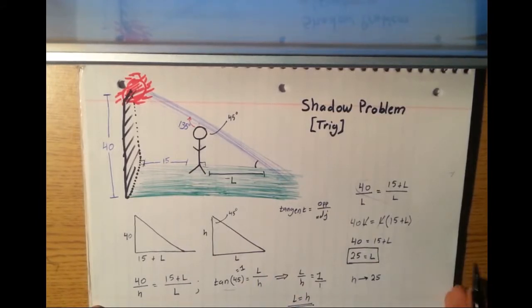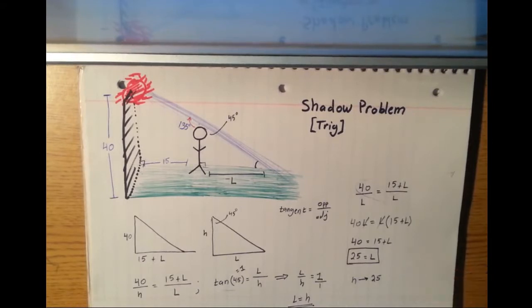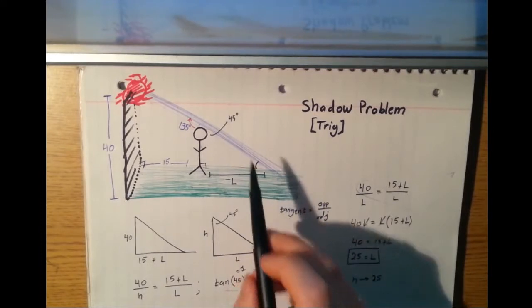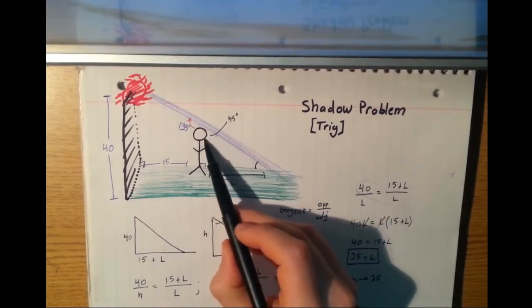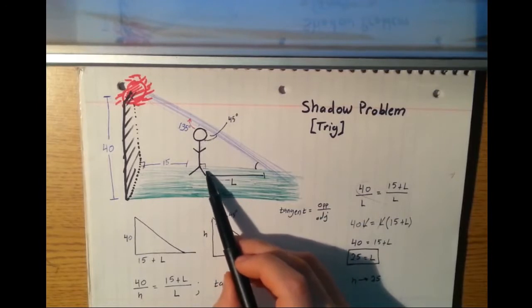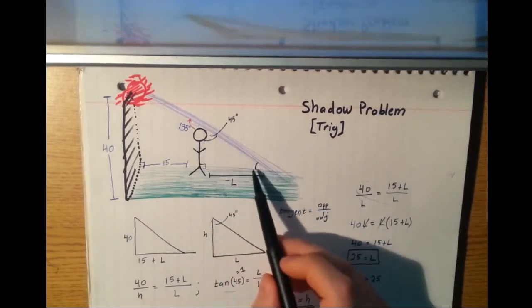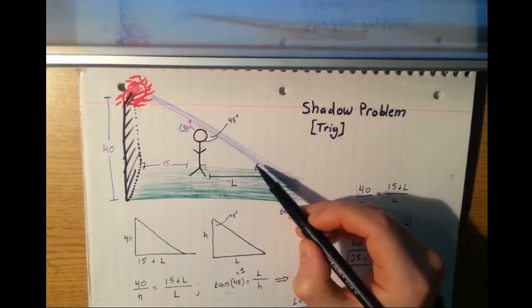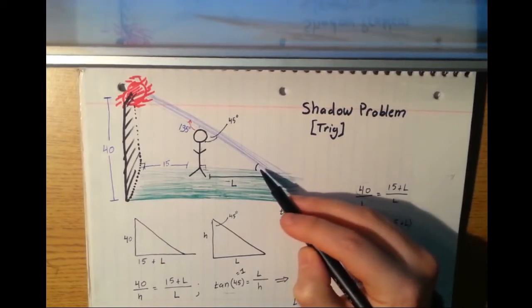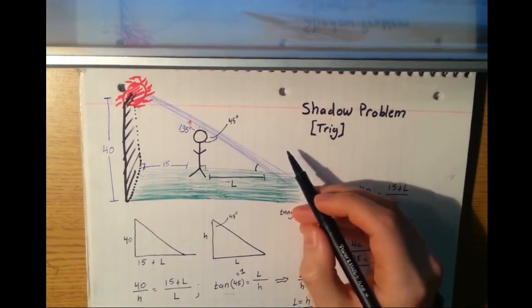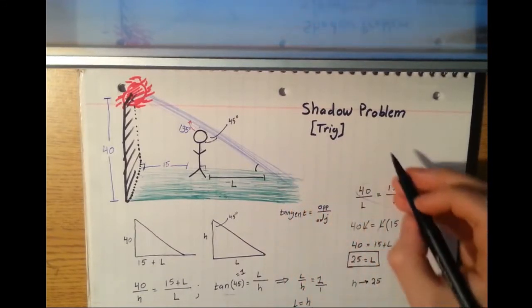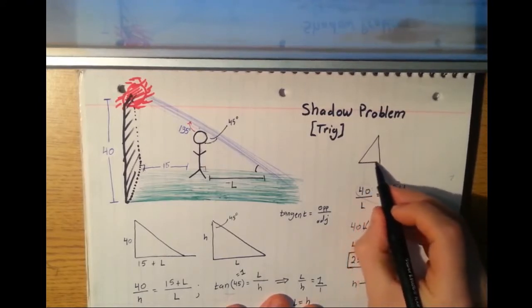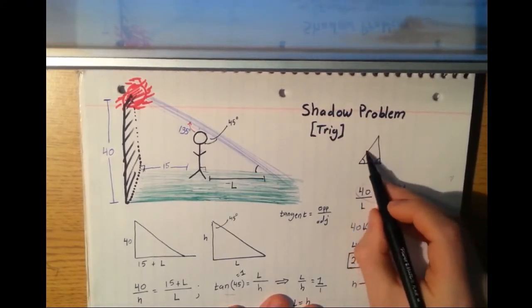And again, if we look at properties of triangles, this makes sense too. This is a 45 degree angle right here. And because this is 90 and all the angles have to add up to 180, this must be 45 as well. And we have something called an isosceles triangle. Now, if you remember your properties of triangles, whenever you have an isosceles triangle, two sides of the triangle are going to be equal to each other.